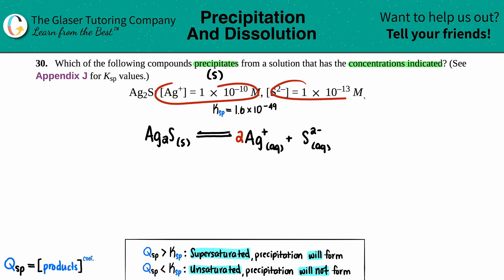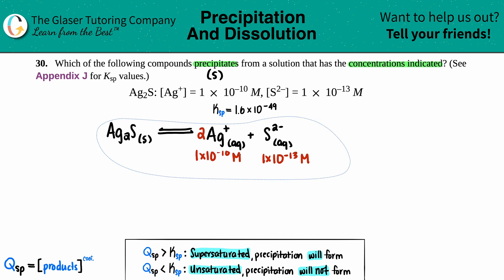They told us what the concentrations were already, so I'm just going to list them out. Don't get tempted to take this and multiply it by two—the balanced equation is separate from how much they told you you have. You have no more or no less than 1 × 10⁻¹⁰ M for this one and 1 × 10⁻¹³ M for this one.